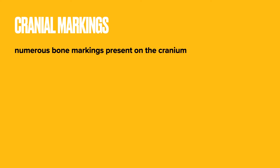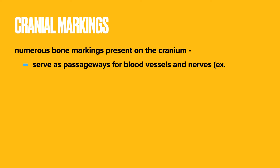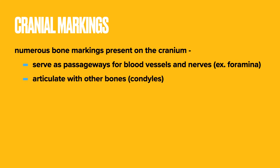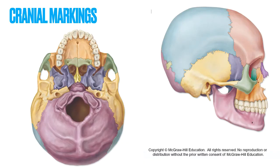Cranial markings are the bone markings present on the cranium. They serve as passageways for blood vessels and nerves — those are going to be the foramina. They articulate with other bones — those are the condyles. They also serve as anchor points for muscles or tissues, such as processes. Many cranial bone features are at the base of the skull, where nerves, arteries, and veins need to pass to and from the brain to receive nutrients and remove waste.